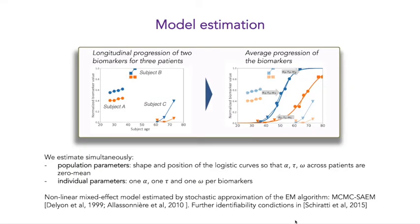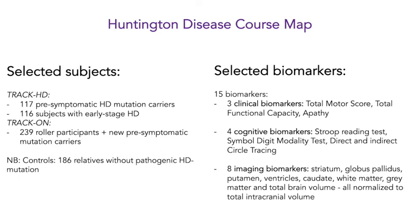As this presentation is more result-oriented than methodologically oriented, we just want to say a few words about the estimation procedure. In the algorithm, we estimate simultaneously the population parameters — basically the shape and position of the logistic curves of the mean trajectory — and on the other hand the individual parameters, which are alpha (the acceleration factor), tau (the time shift), and omega (the inter-marker spacing). For more details about this nonlinear mixed-effect model estimated by stochastic approximation of the EM algorithm, we point to a few references. Now let's use this method to build the Huntington's disease course map.